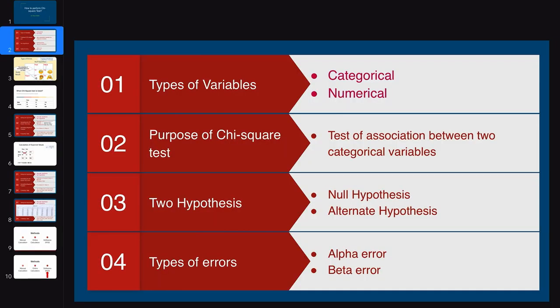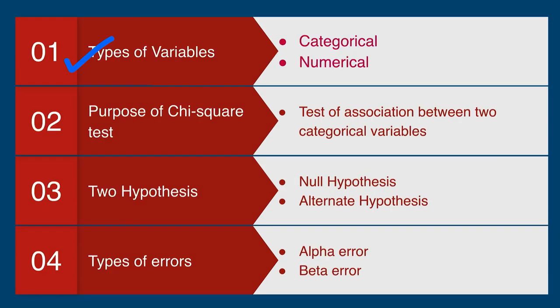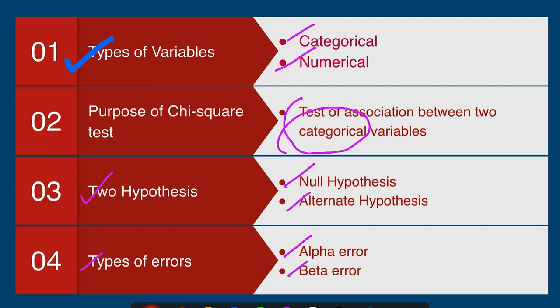To understand the chi-square test, you need four important points: first, the types of variables — categorical and numerical; second, the purpose of chi-square test is to study the association between two categorical variables; third, we have two hypotheses — null and alternate; fourth, we have two types of errors — alpha and beta — and the p-value is the probability of committing the alpha error, that is, rejecting the null hypothesis when it is actually true.